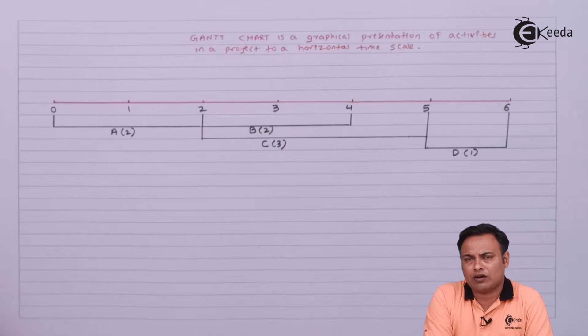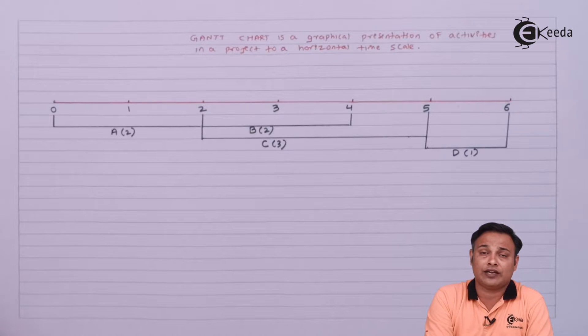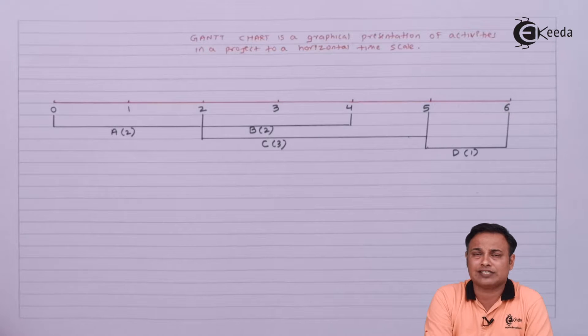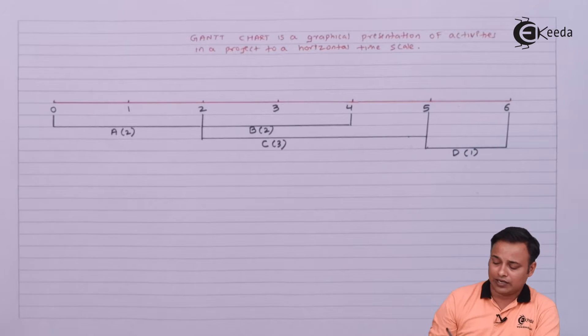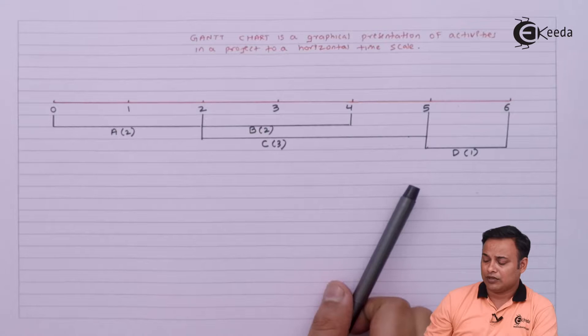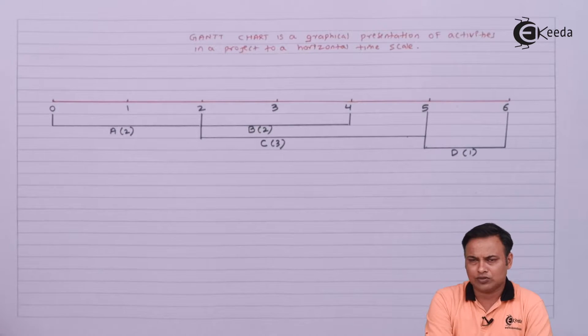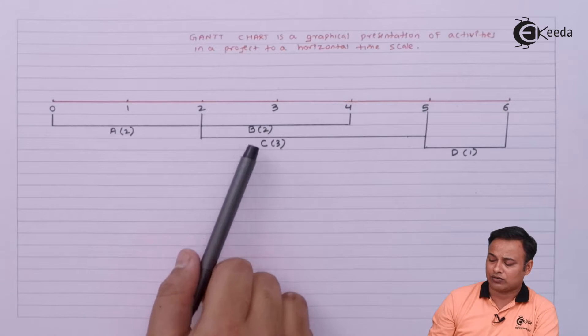What can be the probable disadvantages or backdrops of this Gantt chart? One limitation is that it does not show the interrelationship between the activities separately. I can't really pick out from the diagram which activities are linked to whom. At most I can say B and C will be carried out simultaneously.